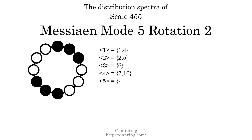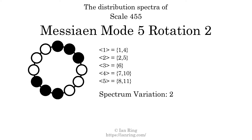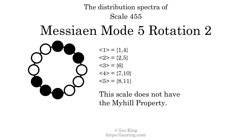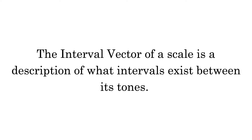The generic interval of 5 scale steps comes in 2 different specific interval sizes: 8 semitones and 11 semitones. The spectrum width of this generic interval is 3. The spectrum variation is the sum of all the widths, divided by the number of tones. The spectrum variation of this scale is 2. Since the variation is greater than 0, this indicates that the scale is not perfectly even. The highest spectrum width is 3; since this is greater than 1, we know that this scale is not maximally even. If every spectrum has exactly 2 specific intervals, we call that the Myhill property. This scale does not have the Myhill property. Since the generic interval ranges overlap, this scale is an improper scale.